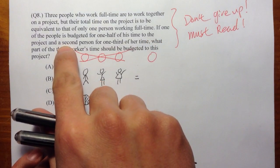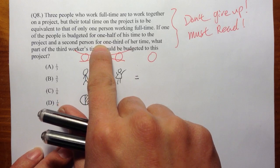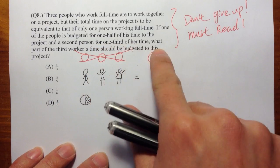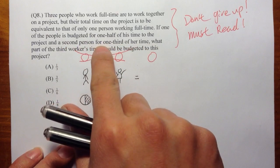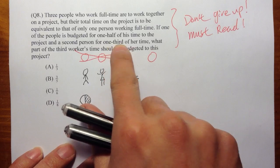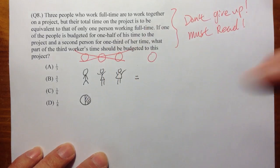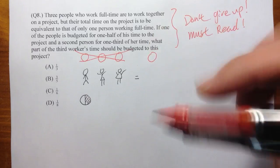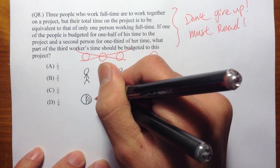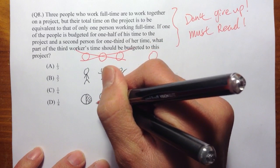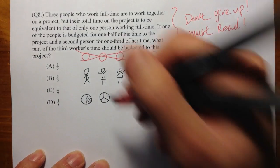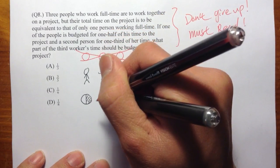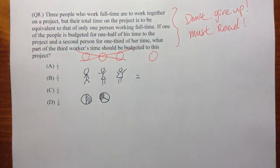And then a second person is going to eat a third of the pizza. A second person is for the one-third of her time. So that's why I said this person is going to eat a third of this pizza. So let me draw a picture. So if you divide this pizza into three parts, this person is going to eat this much.